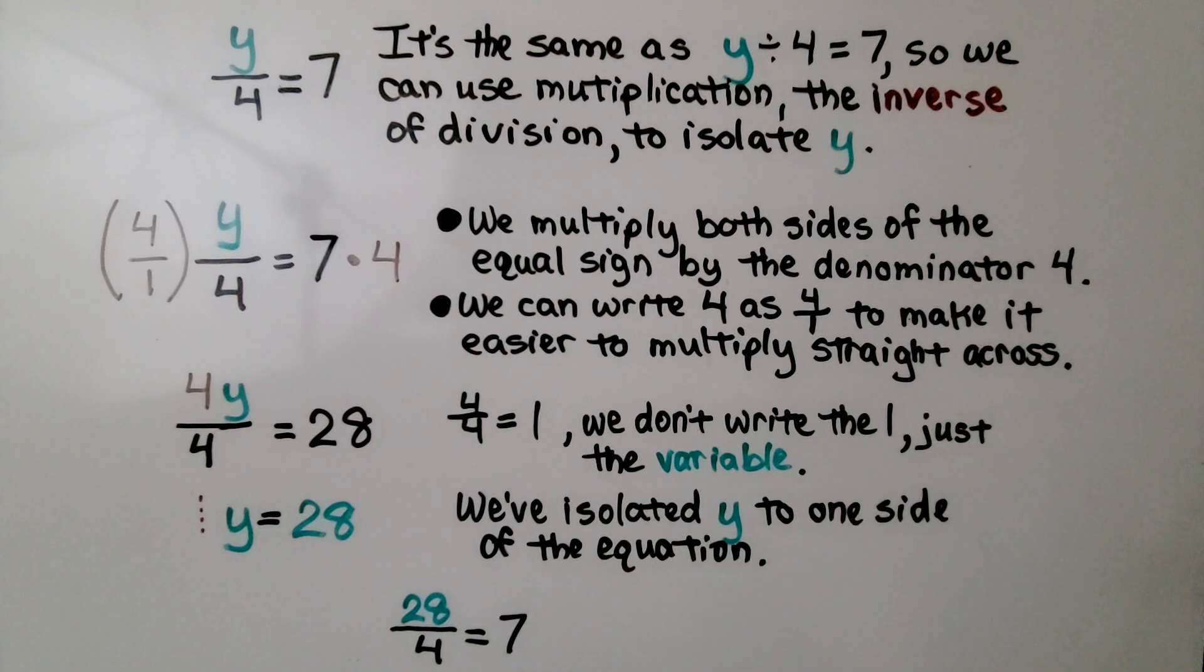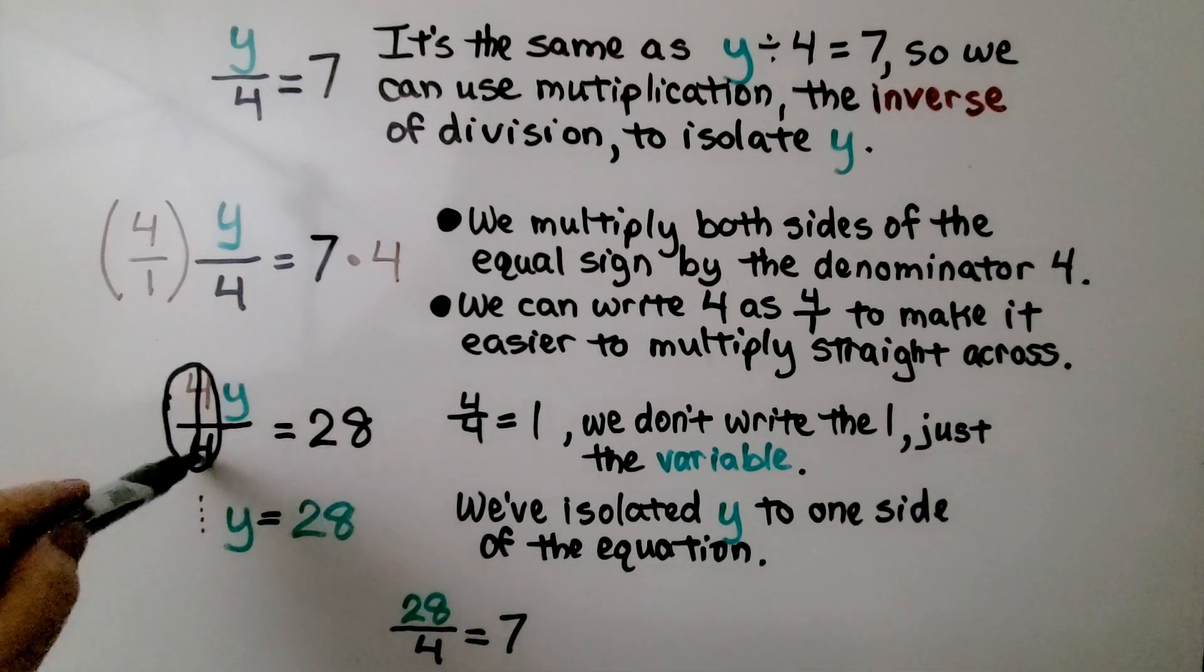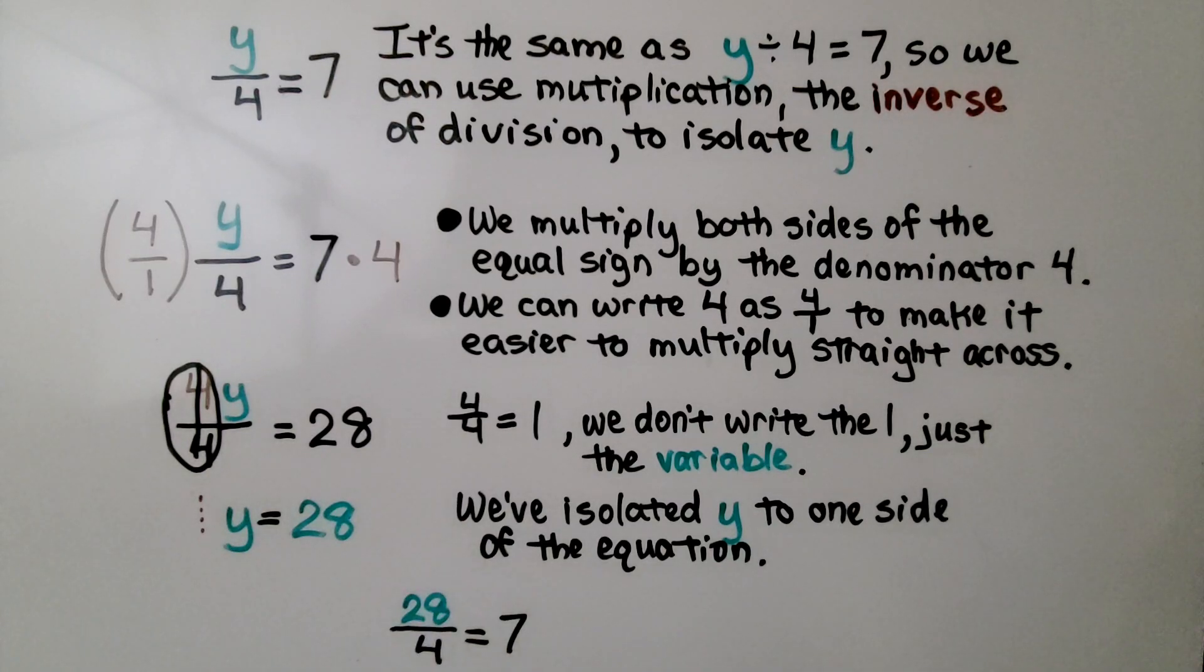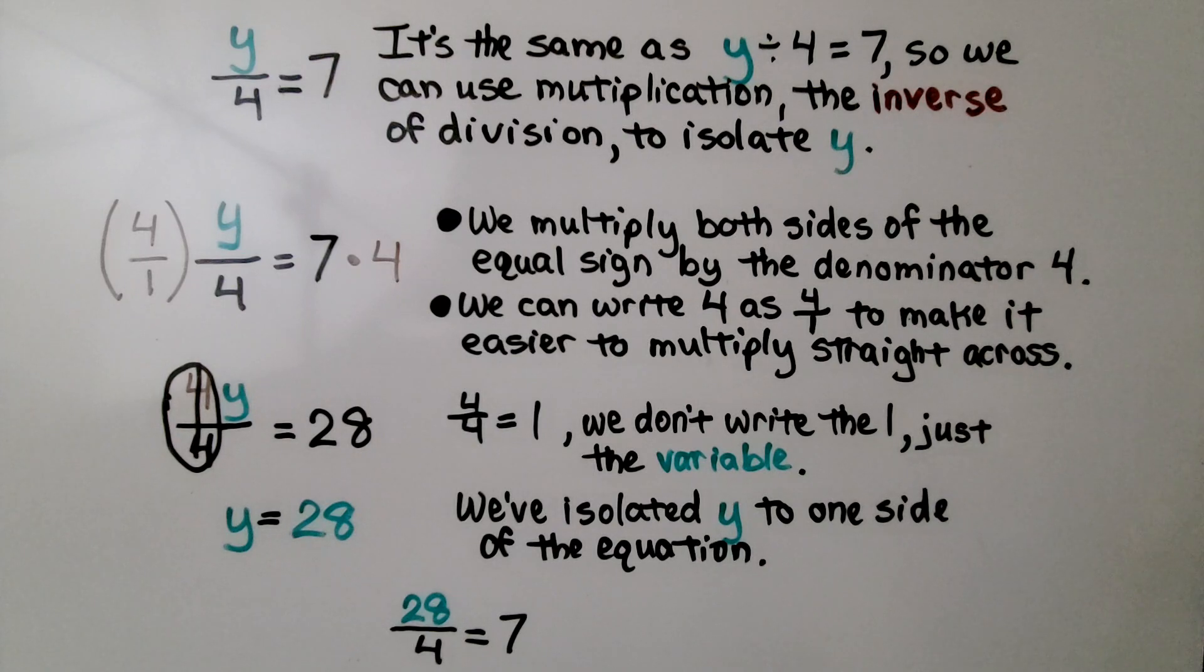We don't write the 1, just the variable. We know this is a 1. We have 1y. We don't write 1 when it's a coefficient. In addition, we see that y is equal to 28, and 28 divided by 4 is equal to 7.